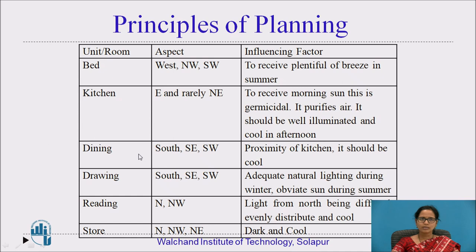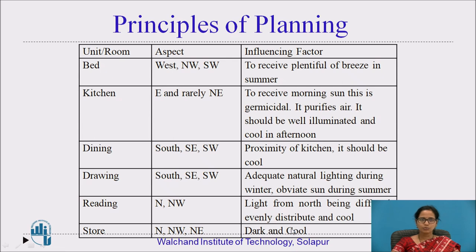The dining room has an aspect of south, southeast, and southwest, providing adequate natural lighting during winter while remaining cool — important as food materials are kept in the dining room. The drawing room similarly faces south, southeast, and southwest for adequate natural lighting during winter and to obviate the sun during summer. The reading room has the aspect of north and northwest, where light from the north is evenly distributed and remains cool. The store room should be placed in the north, northwest, or northeast direction — it will be dark and cool throughout the day.